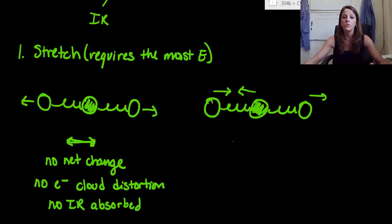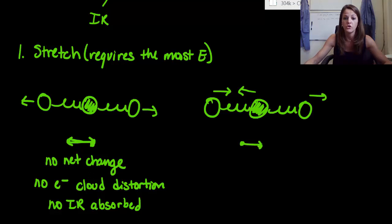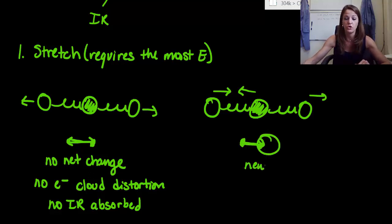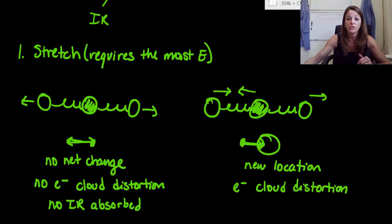For the asymmetric stretch, we see two going to the right and one going to the left — two is stronger than one. Drawing it out: we start with the ones going to the right, new location, come back to the left, then another one goes to the right — we're at a brand new location. There definitely is a net change, so we have an electron cloud distortion, and that means IR radiation will be absorbed here.